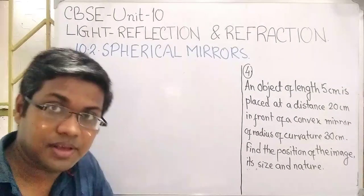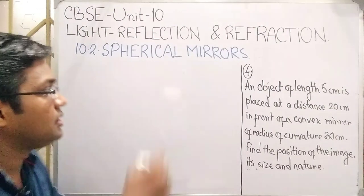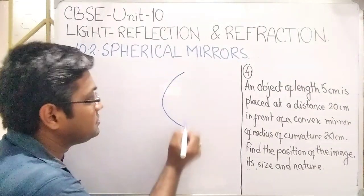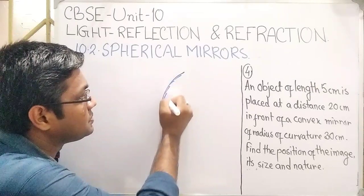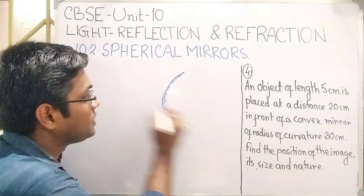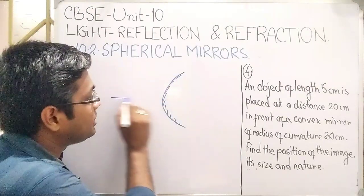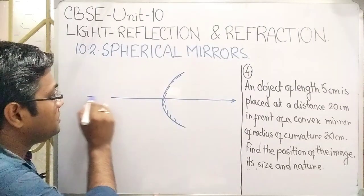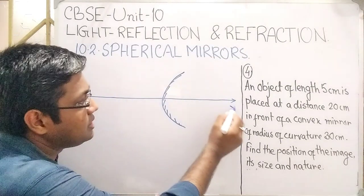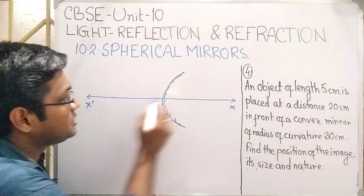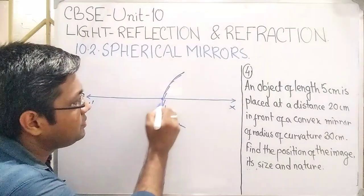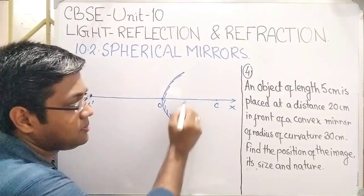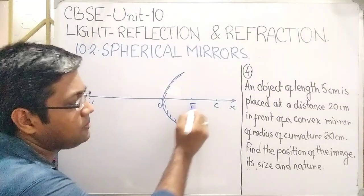Let us first draw a convex mirror. This is a convex mirror with its principal axis. We mark x, x-prime, O, the center of curvature, and the focus.